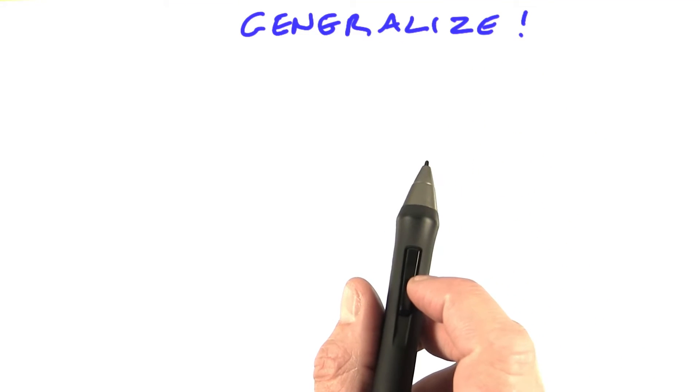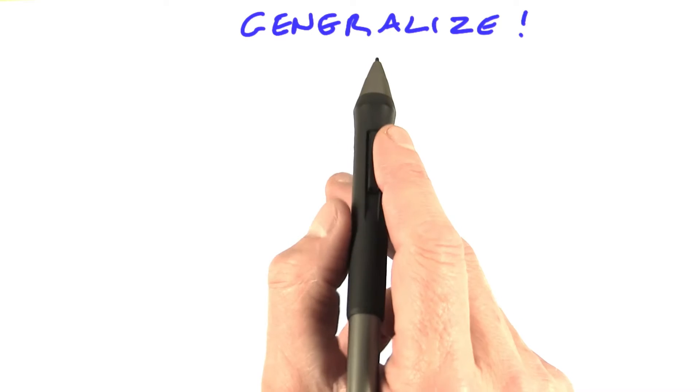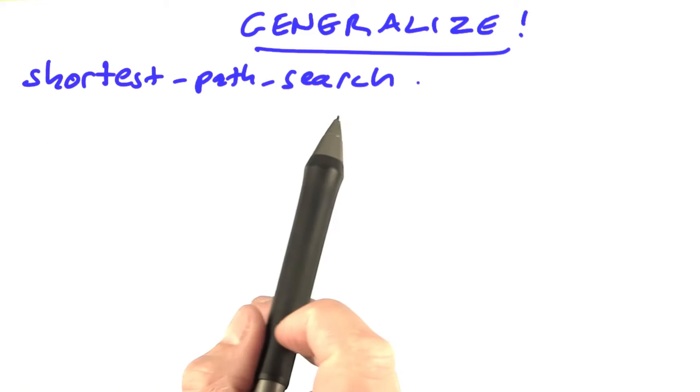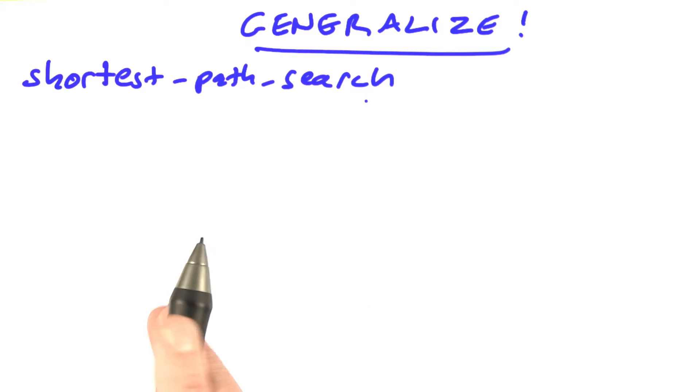Now let's generalize. Let's take the specific solver. We had a specific one for the pouring problem and one for the missionaries and cannibals. Let's generalize them. I'm going to call the generalization shortest path search. That's a search for the shortest path that reaches a goal.